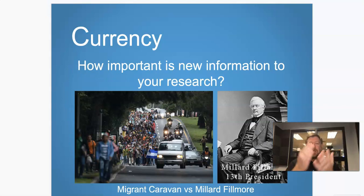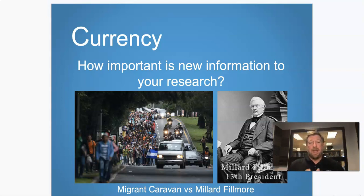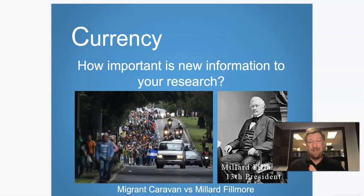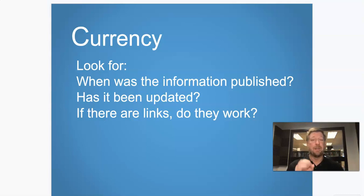The CRAAP test stands for Currency, Relevance, Authority, Accuracy, and Purpose. The first one, Currency — is the information up to date and relevant to right now? If you're researching a migrant caravan coming through Mexico, that information changes minute by minute. If you're studying Millard Fillmore, our 13th president, that information hasn't changed in a long time. Things to look for: can you find out when the information was published, has it been updated, and do links on the page still work?